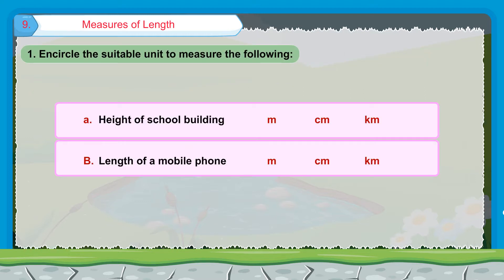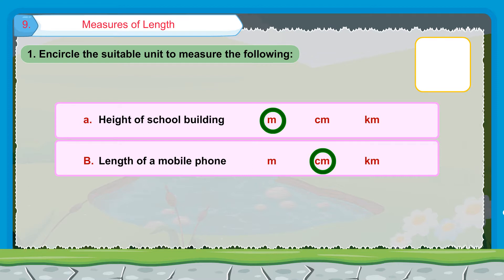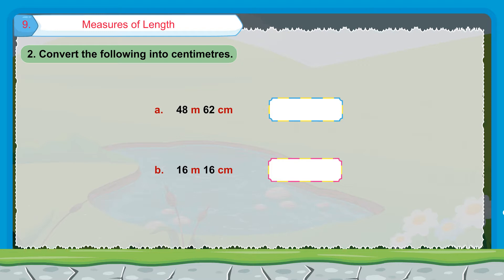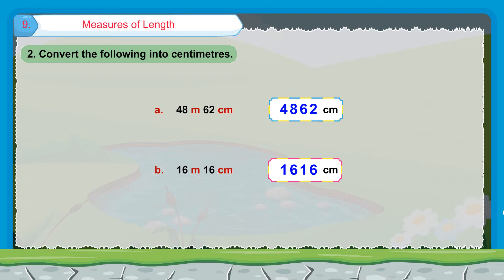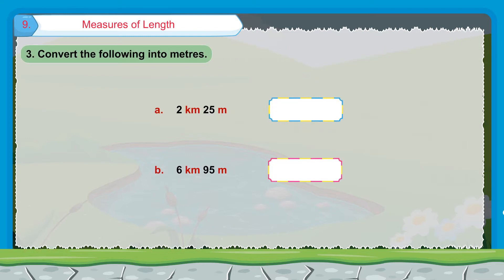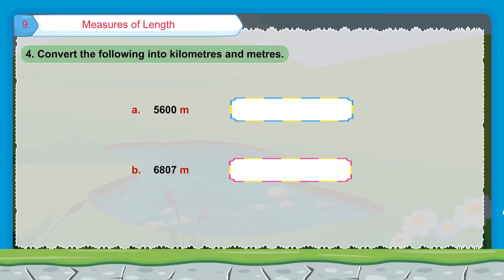Exercise 1: Encircle the suitable unit to measure the following. A. Height of school building. B. Length of a mobile phone. Exercise 2: Convert the following into centimeters. Exercise 3: Convert the following into meters. Exercise 4: Convert the following into kilometers and meters.